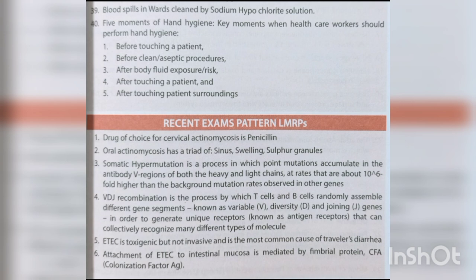Somatic hypermutation is a process in which point mutations accumulate in the antibody V regions of both heavy and light chains at rates about 10^6-fold higher than background mutation rates in other genes. VDJ recombination is a process by which T cells and B cells randomly assemble variable, diversity and joining gene segments to generate unique receptors that can collectively recognize many different types of molecules.